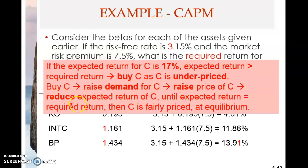This price increase will reduce the expected return, which was 17% — it will now go down because the price has gone up. Just like present value and interest rates: the higher the discount rate, the lower the value or price. So when the price goes up, the interest rate or discount rate goes down, which reduces the expected return of stock C.